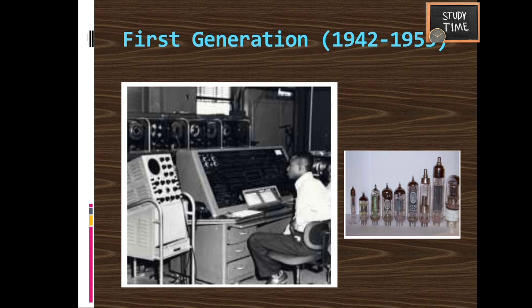First generation computers used electronic valves, which are arrays of vacuum tubes, as the basic components for memory and circuitry for the CPU. These vacuum tubes were fragile glass devices like electric bulbs. They were very expensive and could be afforded only by very large organizations. They produced a lot of heat, causing frequent hardware failures, and occupied a very large amount of space.